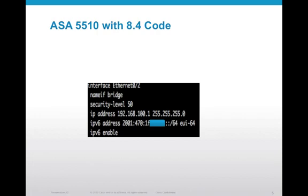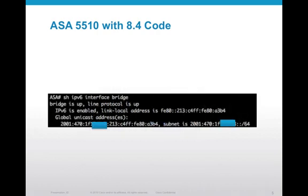This tells the router, or the ASA in this case, that it should generate the last — the host portion — of my address for me. The output as seen in show IPv6 interface is my IPv6 host address: 213C4FFFE80A3B4.